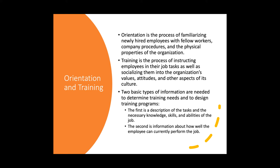Two basic types of information are needed to determine training needs and to design training programs. The first type is a description of the tasks and the necessary knowledge, skills, and abilities — the KSAs — to succeed in the job. That's the first set of information: what does the role call for?